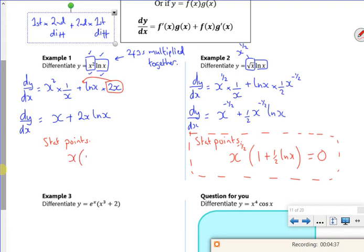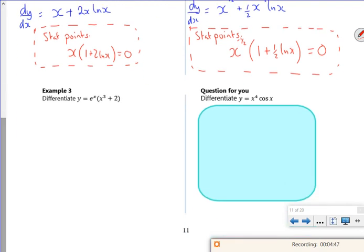I'd want to take out the X as a factor and have 1 plus 2 ln X is equal to 0. So that would be only if I was working out stationary points. You've got to factorise it to do it.